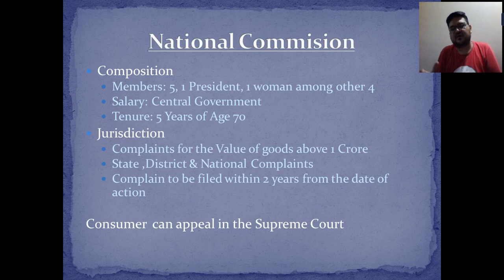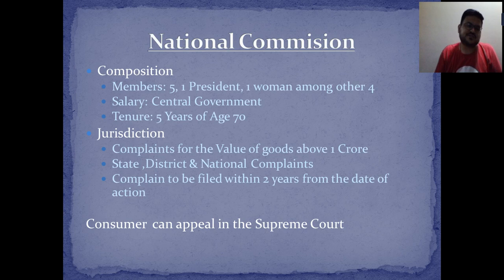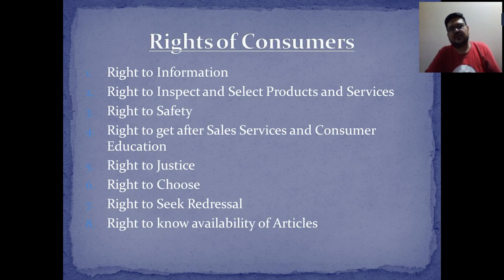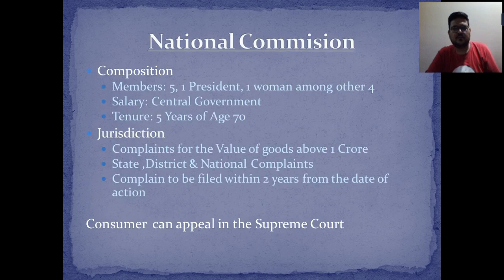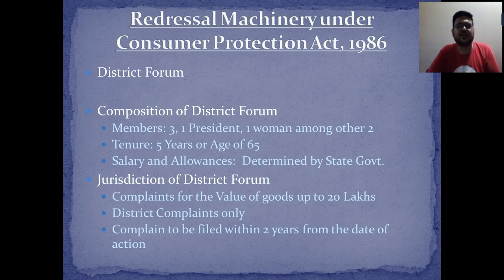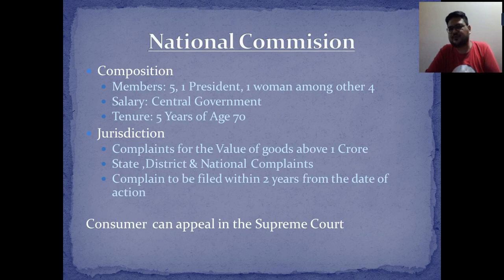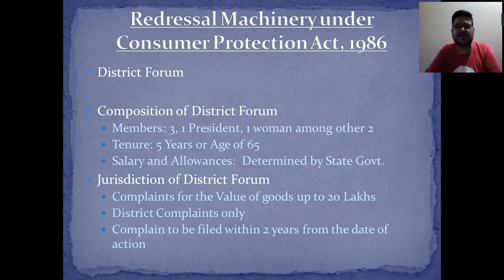If your complaint exceeds ₹20 lakhs you go to the national commission. The national commission has a five-member team — one president and one woman among the other four — with payment by the central government, and members work five years or up to age 70. For complaints above ₹1 crore, you go directly to the national commission, and all complaints must be filed within two years. If not satisfied with the national commission, you can appeal to the Supreme Court.